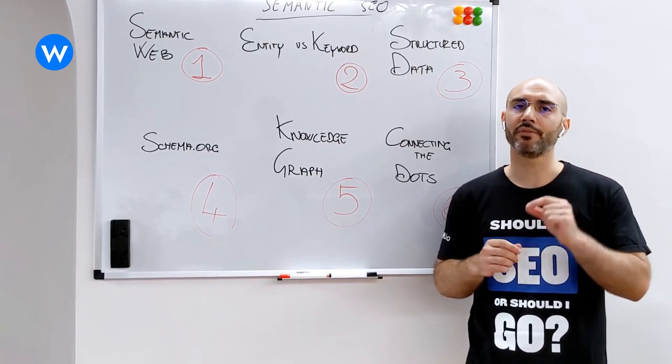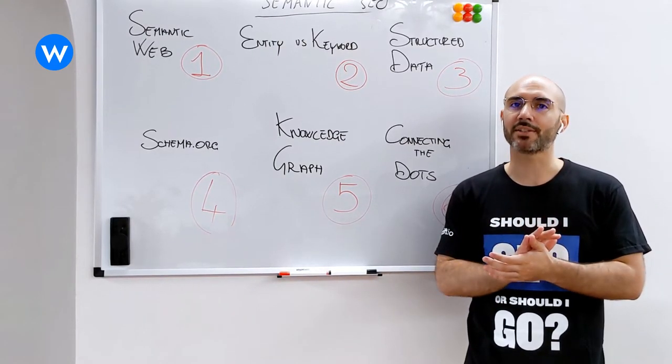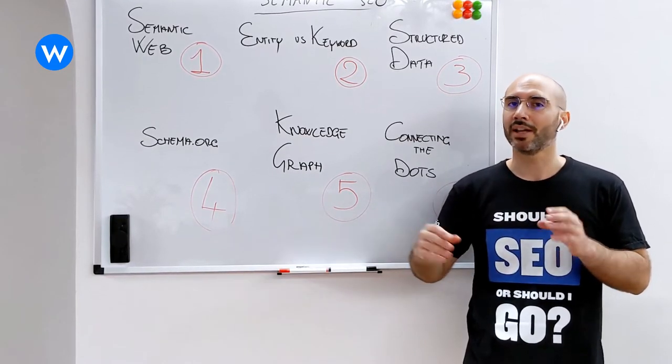This is at the basis of the semantic web. It is called a triple. It is a simple statement that helps us define for machines the relationships that exist between objects in the world.